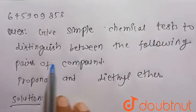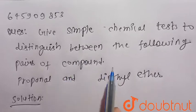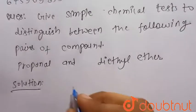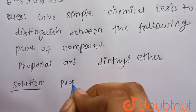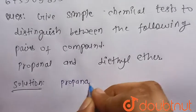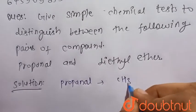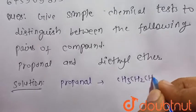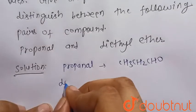Give simple chemical test to distinguish between the following pairs of compounds: propanol and diethyl ether. So we know that propanol is an aldehyde, that is CH3CH2CHO, and diethyl ether is C2H5OC2H5.